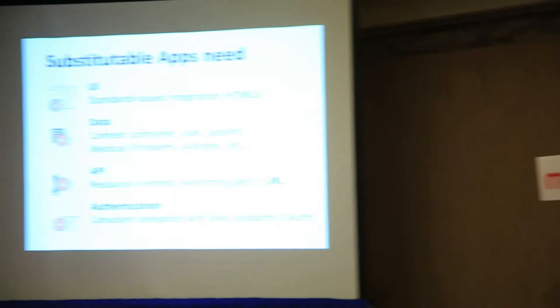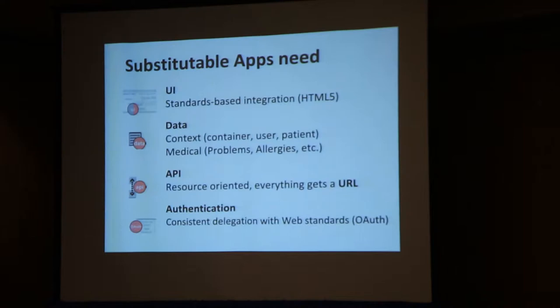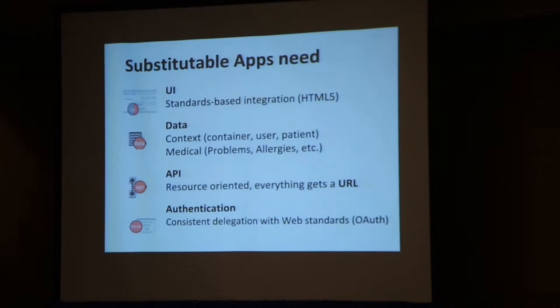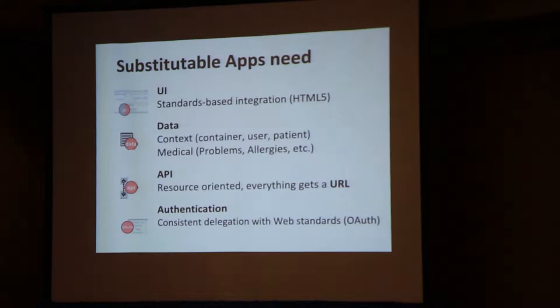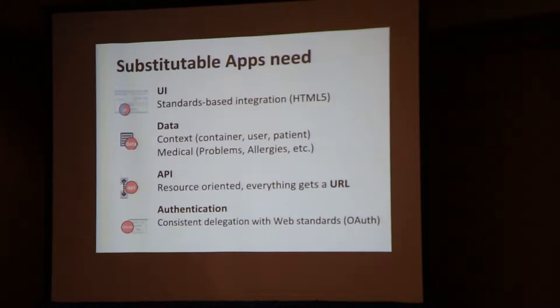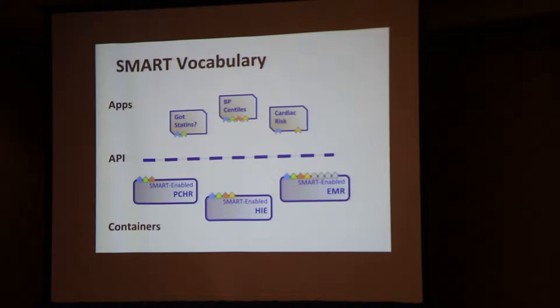I'll show you some of the RDF basis for how we expose data and some examples of apps we've been building. At a 30,000-foot view, we're providing a platform for folks to build apps that plug into these systems. There are four core areas: first, user interface — a way to build an app with a UI that plugs into existing electronic medical record systems; second, data — consistent representations of data in these systems, including medical data like pressures, lab results, and patient demographics; third, an API for accessing those data; and fourth, authentication so users can delegate access to records to an app.